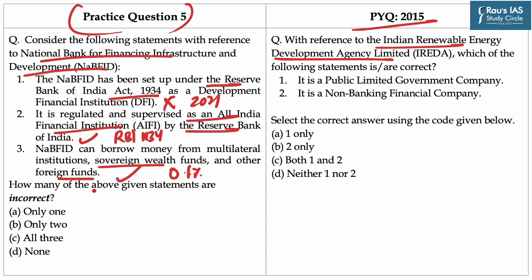How many of the above given statements are incorrect? Only one statement is incorrect, hence option A is the right answer. Whereas PYQ is concerned, option C was the right answer.